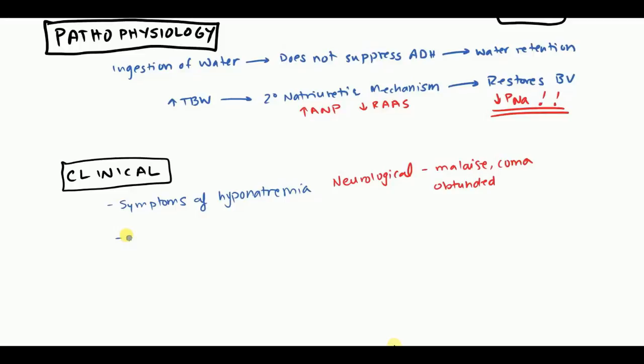So let's look at labs. These patients will obviously have low plasma osmolality because they're retaining all the water, and because they're retaining all the water, they're diluting that plasma sodium. At the same time, because of the secondary natriuretic mechanisms, the only way the body can get rid of water is actually losing sodium as well.